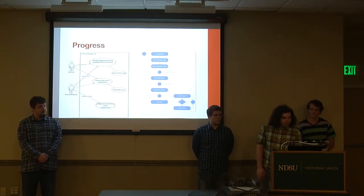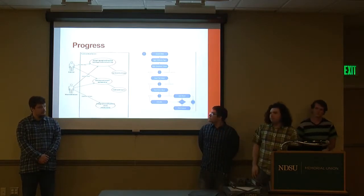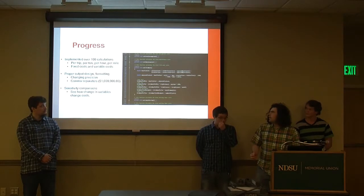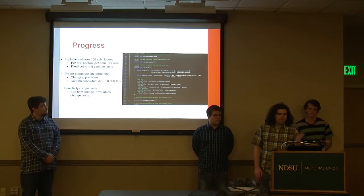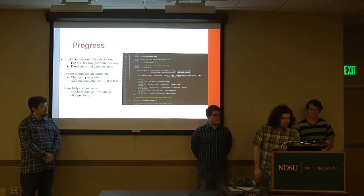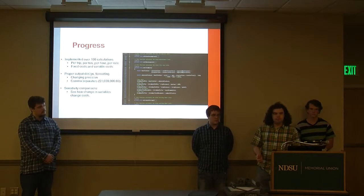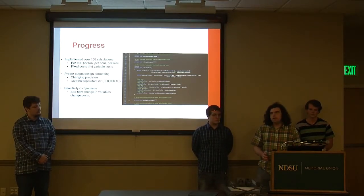We came up with some diagrams that detail how the user uses the application, following that pathway I described. We've got all of our calculations implemented — there are over 100 calculations in the whole project, covering things like calculating everything per trip, per ton, per hour, per mile, and the totals for fixed costs and variable costs. We went through a lot of formatting as well, like changing precision and decimal places, being able to increase and decrease those, and adding comma separators for readability.